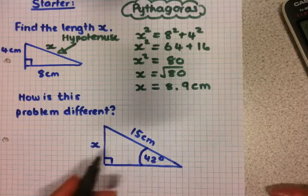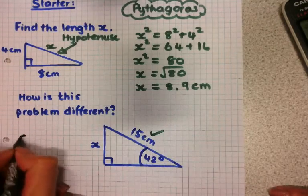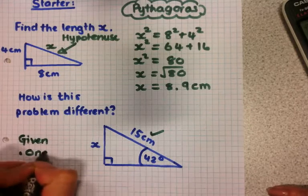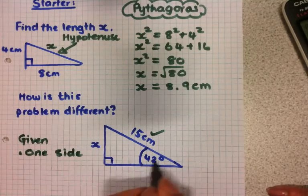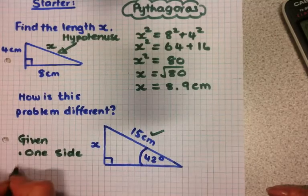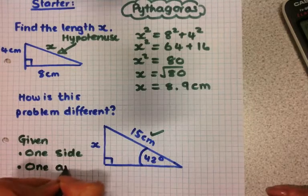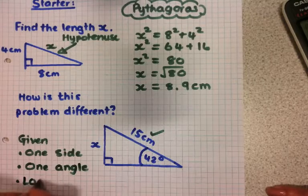So what you should have noticed is we're given one side, but we're also given one of the angles apart from the right angle. So we're given an angle and we're looking for a side.